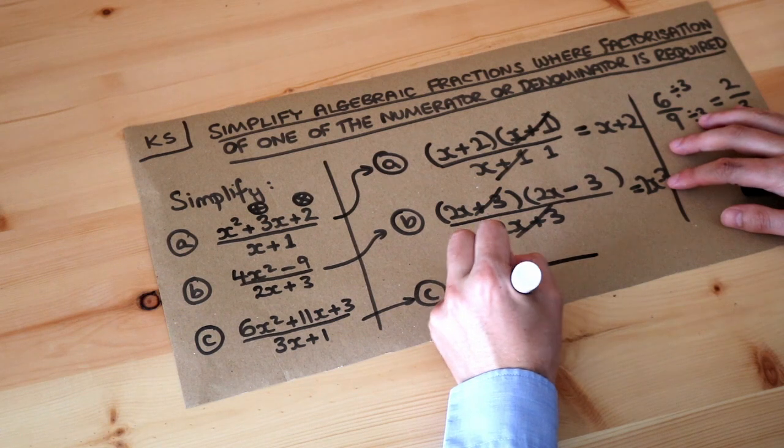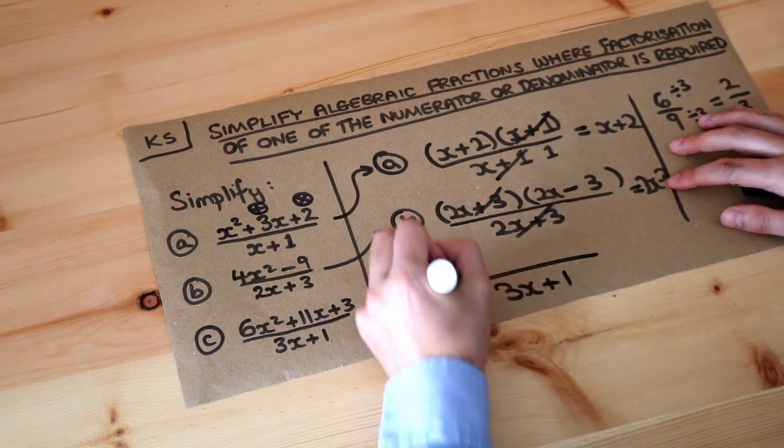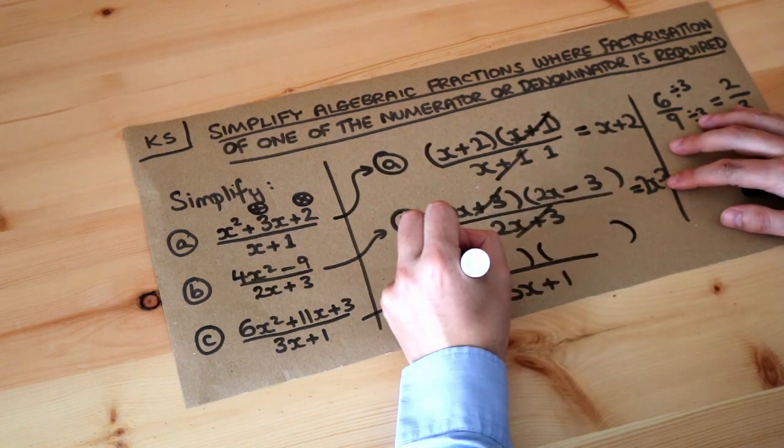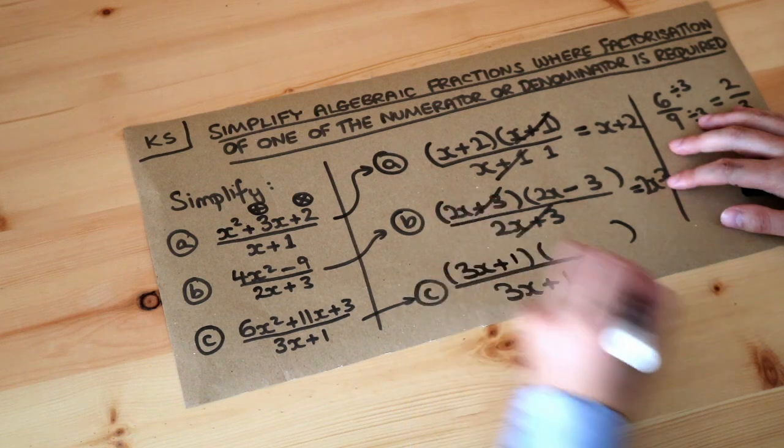And we can use that as a sort of cheaty hint, basically. So if you've got the 3x plus 1 at the bottom, we think there's going to be one bracket of 3x plus 1 at the top. Now let's see if that's right.